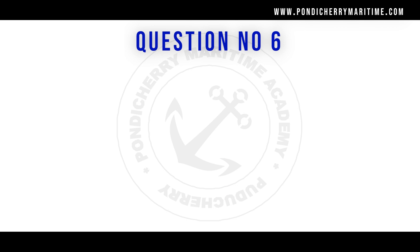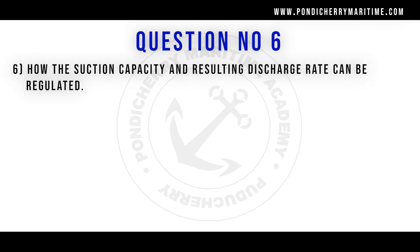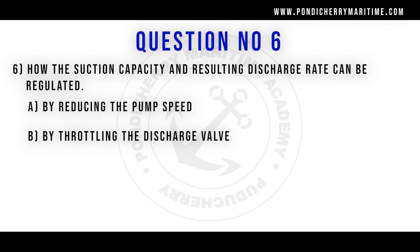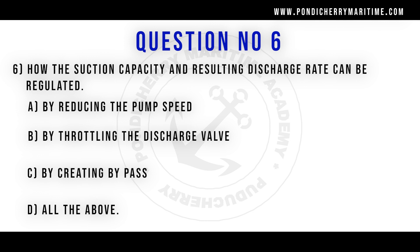Sixth question. How can the suction capacity and the resulting discharge rate be regulated? Option A. By reducing the pump speed. Option B. By throttling the discharge valve. Option C. By creating a bypass. Option D. All of the above. Correct answer is option D: All of the above.